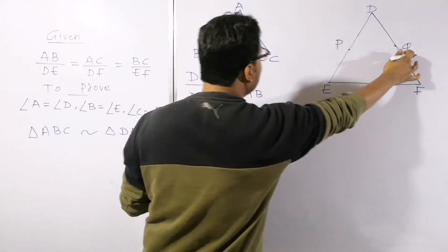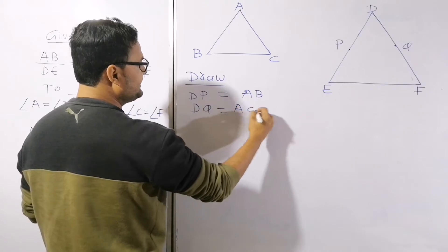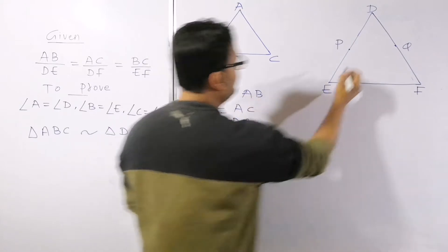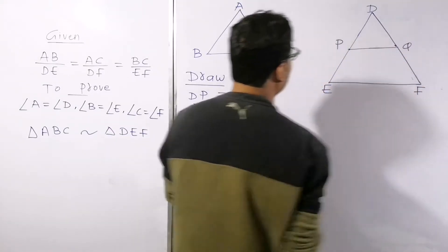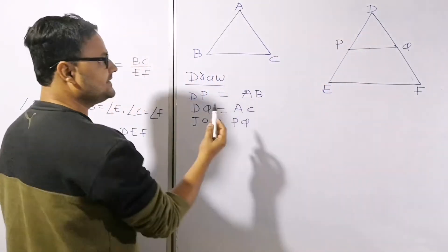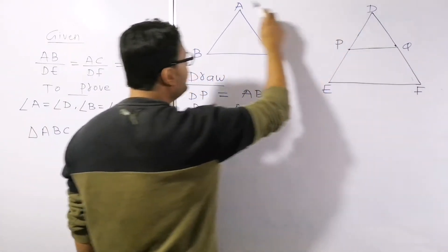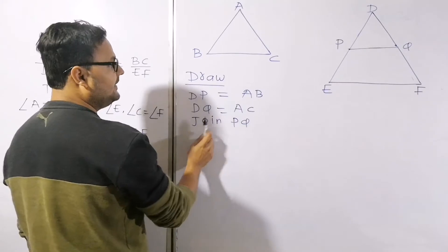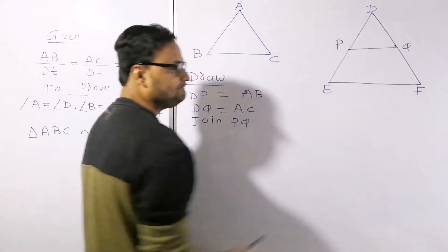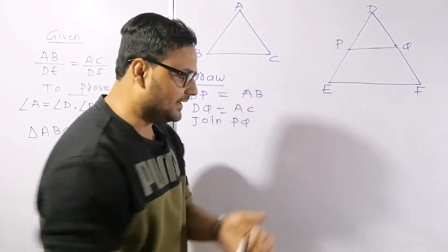We draw DQ equal to AC, and then we join PQ. So by construction: DP = AB, DQ = AC, and we join PQ. This gives us one more triangle, triangle DPQ.